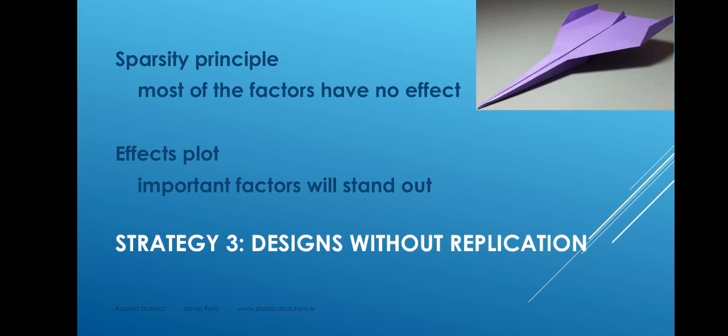Our third strategy for reducing the size of experiments is to carry out an experiment without replication, and this is based on the sparsity principle. If we have an experiment with a large number of factors, it's probably the case that most of those factors are having no effect on the response — that's the sparsity principle. Most factors do not have an effect, and the significant factors are sparse. What appears to be the effect of non-significant factors is basically just more random variation, so if we draw a plot of the effects of all the factors, the significant ones will stand out.